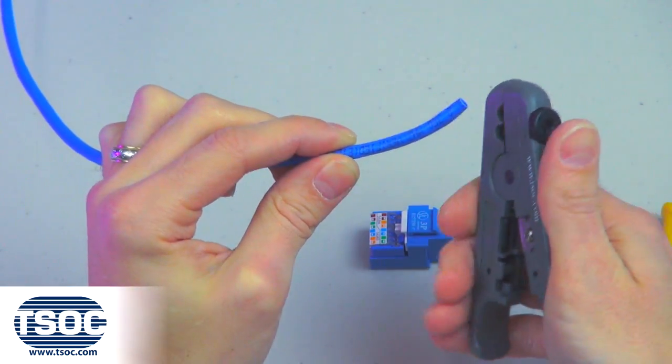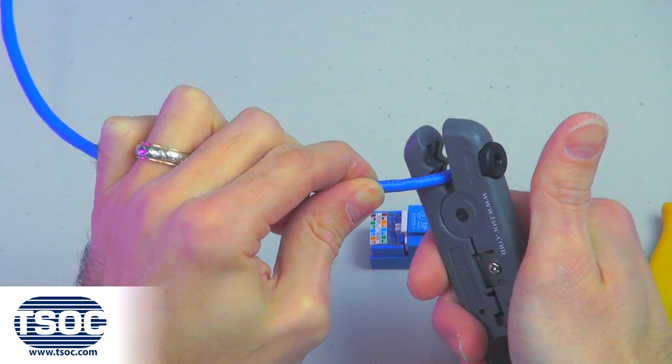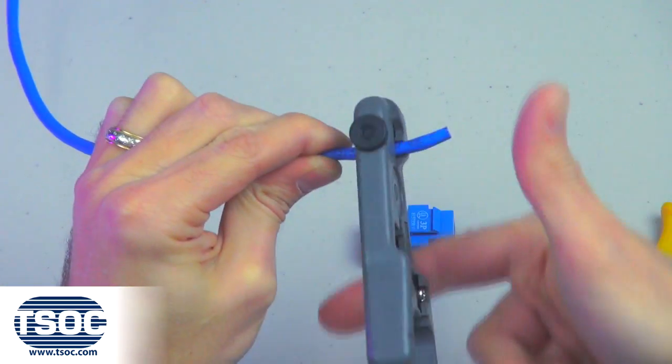Step 1. Cut the specified length of CAT-5E UTP 4-Pair Cable and insert into the Cable Prep Tool. Rotate in one direction one to two turns.